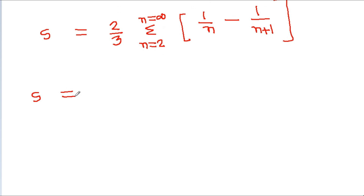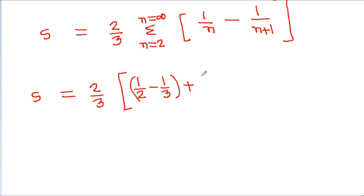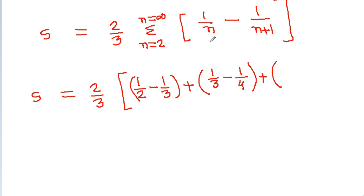So S will be equal to 2 by 3 times the telescoping sum: at n equals 2 it is 1 by 2 minus 1 by 3, at n equals 3 it is 1 by 3 minus 1 by 4, at n equals 4 it is 1 by 4 minus 1 by 5, plus and so on.